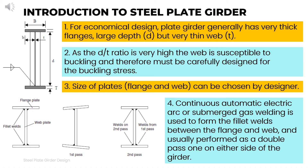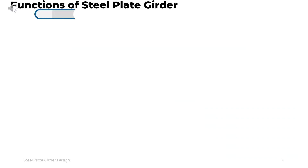Plate girders generally have very thick flanges and large depth but a very thin web. As the d-over-t ratio is very high, the web is susceptible to buckling, and stiffeners are usually required to strengthen the web. Continuous automatic electric arc or submerged gas welding is used to form the fillet welds between the flange and web, usually performed as a double pass, one on either side of the girder.